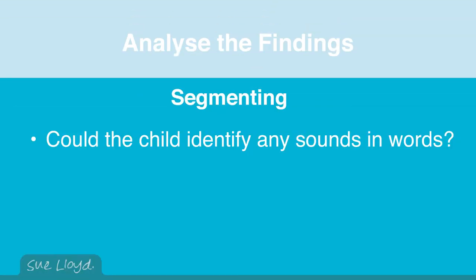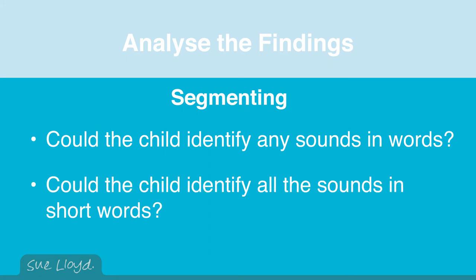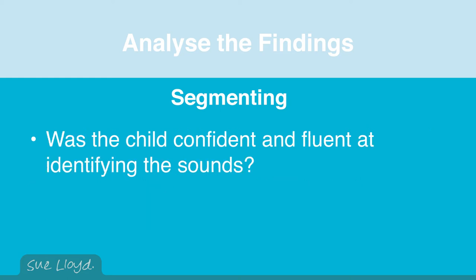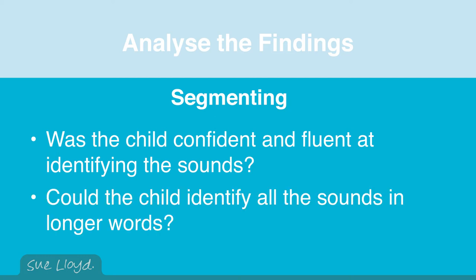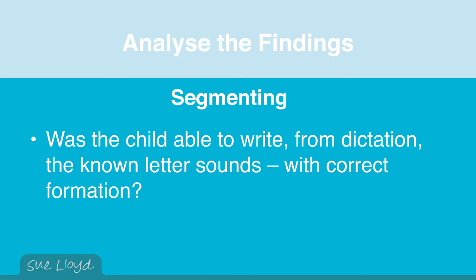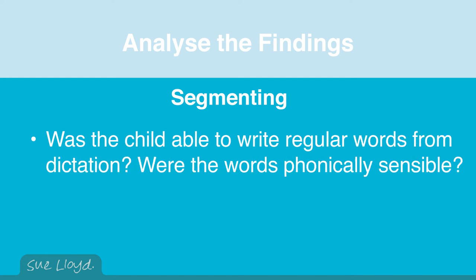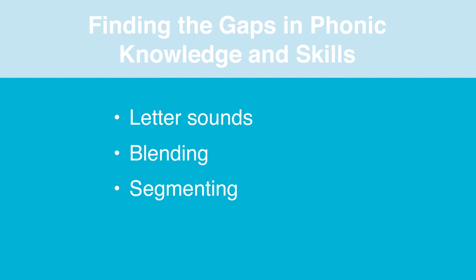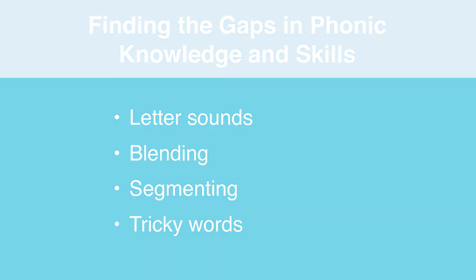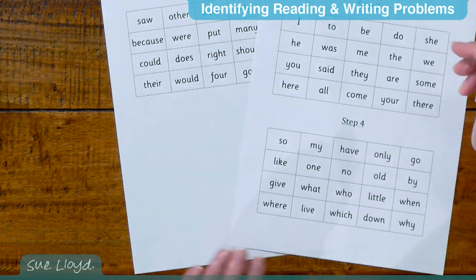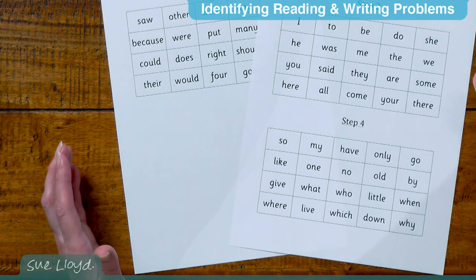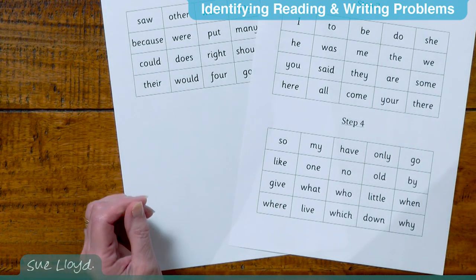Could the child identify any sounds in the words? Could the child identify all the sounds in short words? Was the child confident and fluent at doing this? Could the child identify all the sounds in longer words? Was the child able to write from dictation the known letter sounds with correct formation? Was the child able to write regular words from dictation and were the words phonically sensible? Then go through the tricky words introduced in steps 3, 4 and 5, make a note of the words that cannot be read or spelt, and gradually teach them during the intervention sessions.